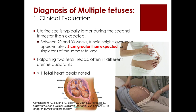Multiple fetuses can be diagnosed through clinical evaluation. In multiple gestation, uterine size is typically larger during the second trimester than expected. Between the 20th and 30th week AOG, the fundic height averages approximately five centimeters greater than expected. We can also palpate two fetal heads often in different uterine quadrants, and appreciate more than one fetal heartbeat.